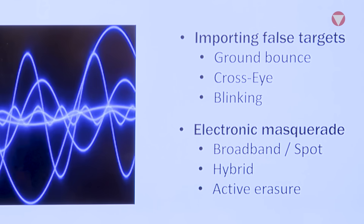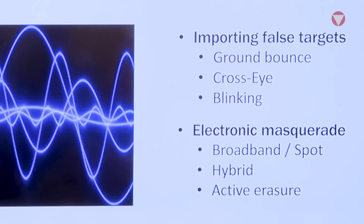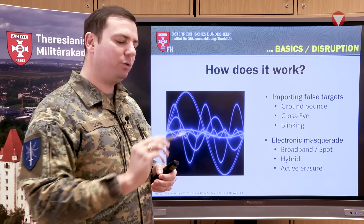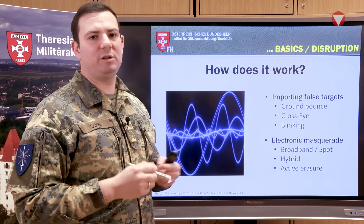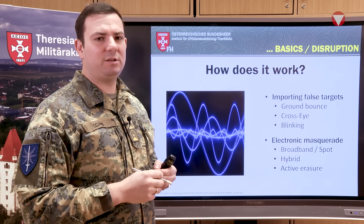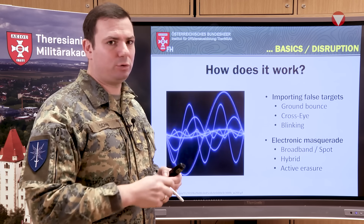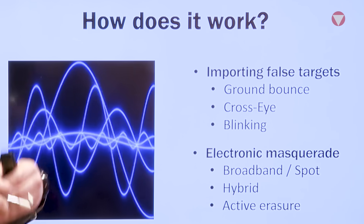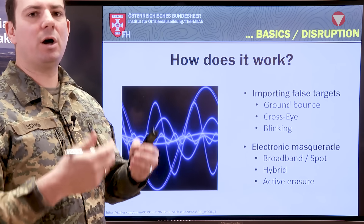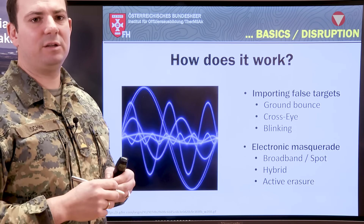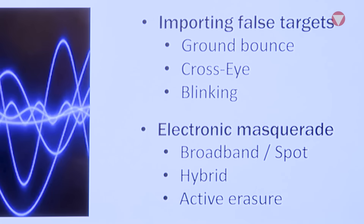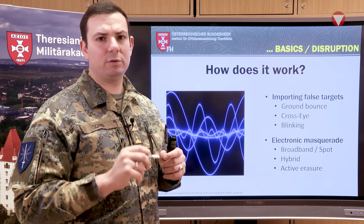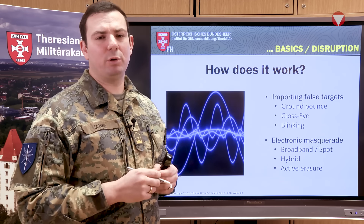Regarding importing false targets: ground bounce is a type of interference where you bounce the signal from the ground to the missile to confuse it about where the signal is coming from — the missile then thinks the signal is coming from below and crashes into the ground. Cross-eye is a special kind of radar transmission used to project a false target, confusing the missile so it cannot find the real target. Blinking alternates signals from left, right, and top-down to overheat the servo motor and crash the missile.